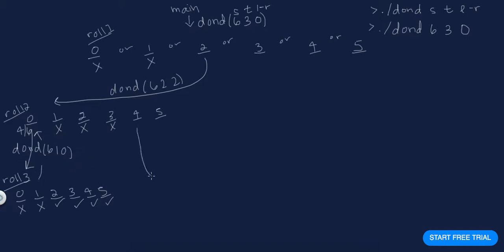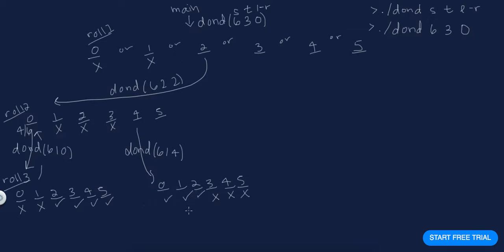Now let's look at DOND(6, 1 roll left, last roll = 4). I could roll zero, one, two, three, four, or five. Since the last roll was four, if I roll a three, four, or five I lose; zero, one, and two are good. So the probability of winning is one-half, and I return one-half.